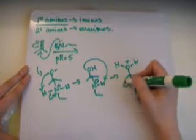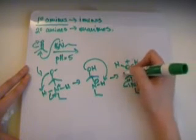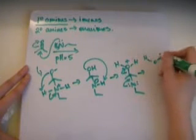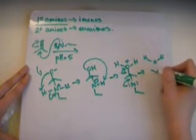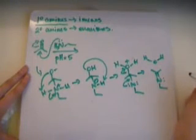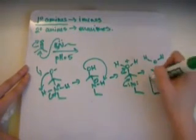Now, this lone pair will come down to form a pi bond while simultaneously kicking off the water to get this structure. And, there we have a primary amine reacting with the ketone to form an imine, which is this structure here.